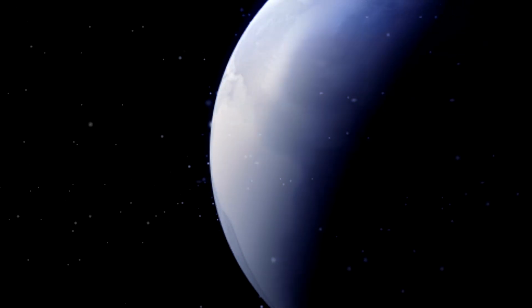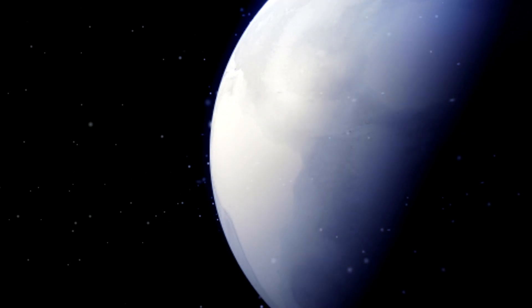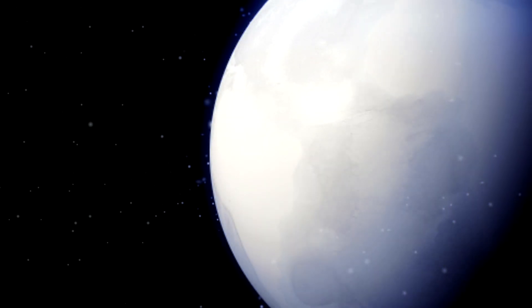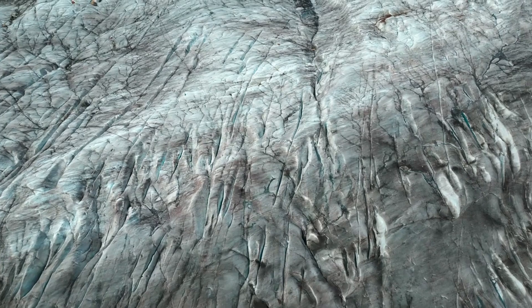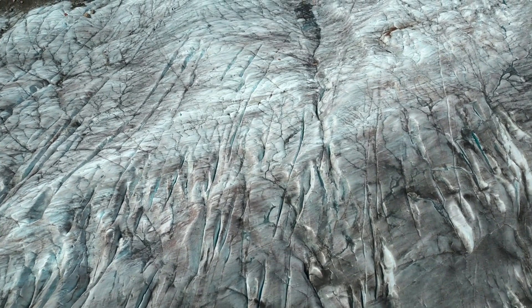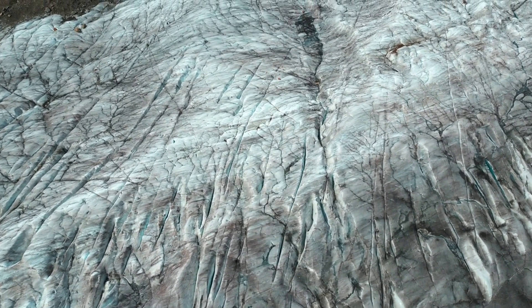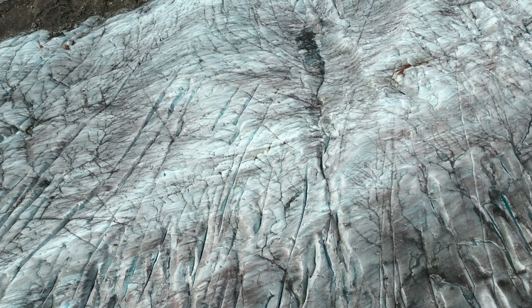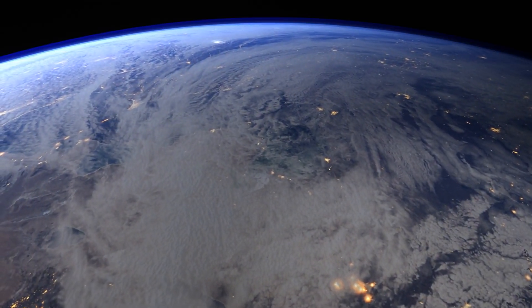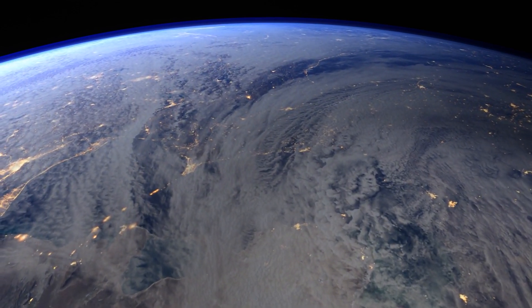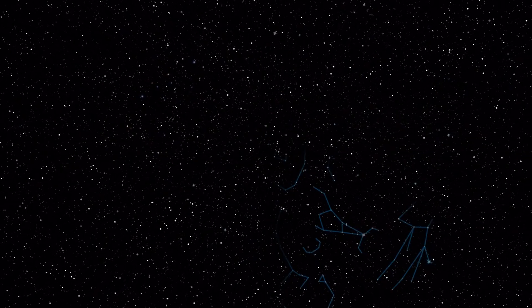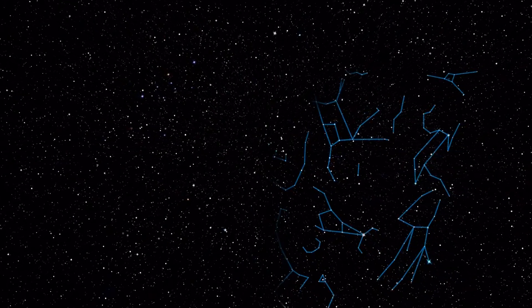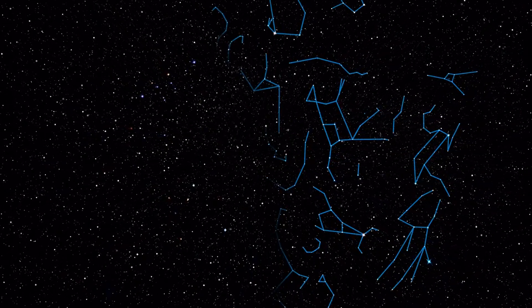In the vast expanse of 50,000 years, multiple ice ages could come and go, each leaving its mark on the planet. Glaciers might advance and retreat, carving out valleys and depositing moraines, reshaping landscapes in their wake. The night sky, a source of wonder for all of Earth's inhabitants, will have transformed. Due to the Earth's axial precession, our North Star will change, and constellations will shift, realigning the celestial stories they tell.